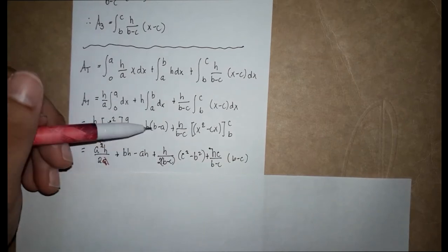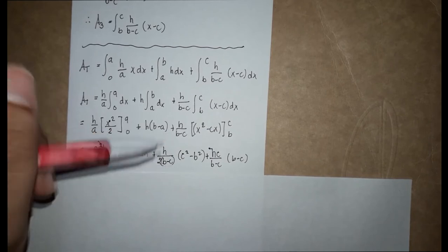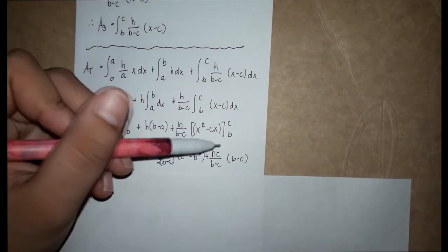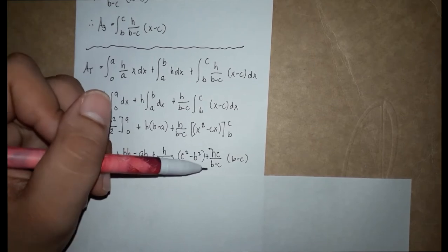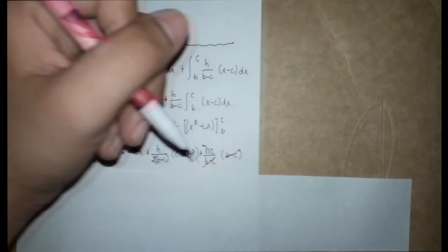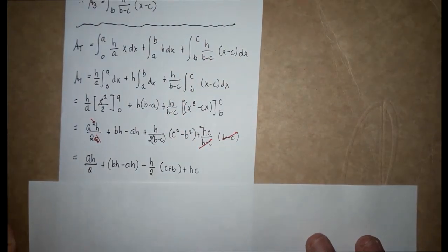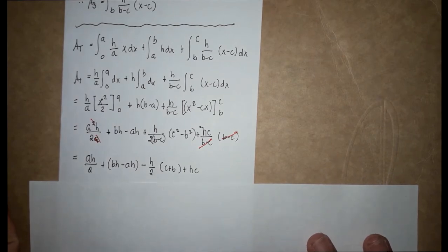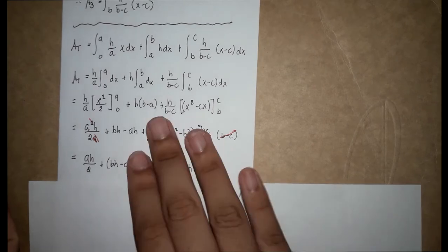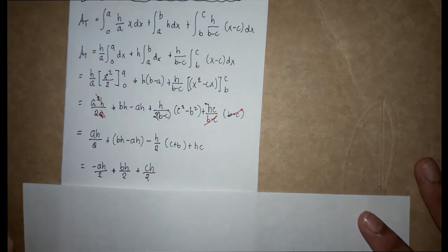Distributing h, we get h over 2(b minus c) times (c squared minus b squared) plus hc over (b minus c) times (b minus c), where the (b minus c)'s cancel. Simplifying, we now have ah over 2 plus bh minus ah minus h over 2 times (c plus b) plus hc.